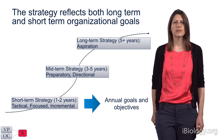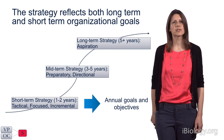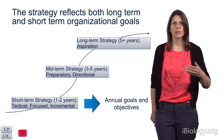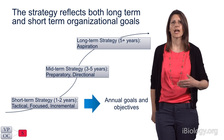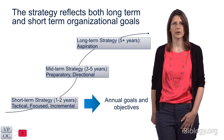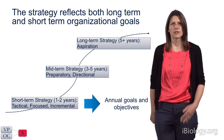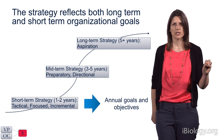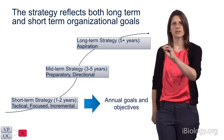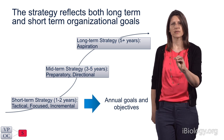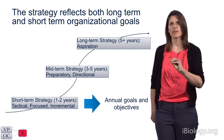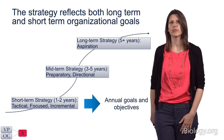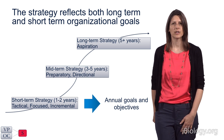Short-term strategy feeds into the goals and objectives that every person and stakeholder has with regards to the enterprise over the coming year. If the short-term strategy is where the enterprise is going, the goals and objectives would be where every individual within the organization is headed personally over the next one to two years.